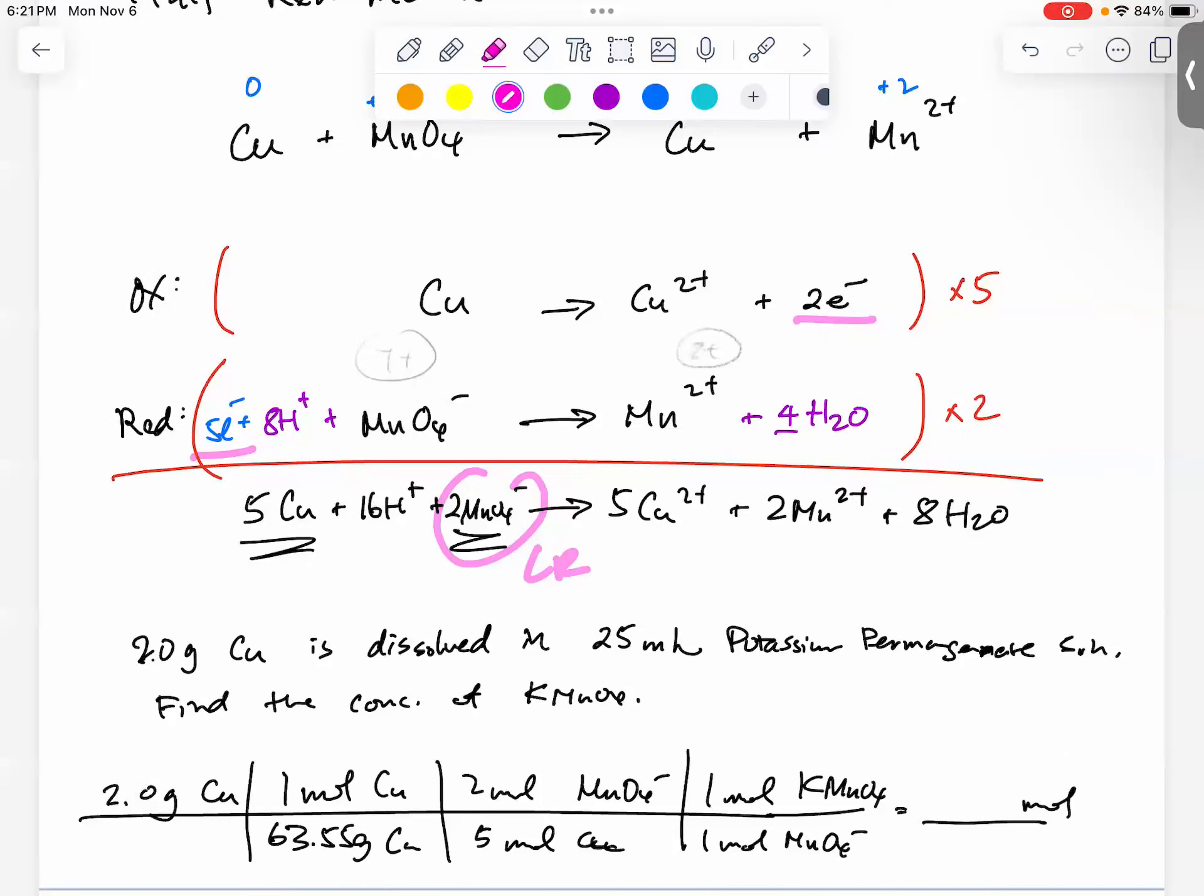And also, copper two plus, it's blue in color. So, that also tells you the state of the titration.